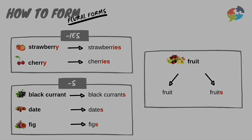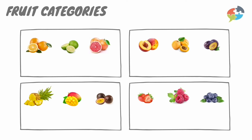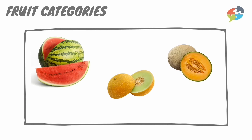Part five: fruit categories. Oranges, limes, or grapefruits are called citrus fruits. Nectarines, apricots, or plums are also known as stone fruits. Pineapple, mango, and passion fruit are tropical or exotic fruits. Then there are berries, as we have covered earlier, such as strawberries, raspberries, or blueberries. And finally, the melons, such as watermelon, honeydew melon, or cantaloupe melon.